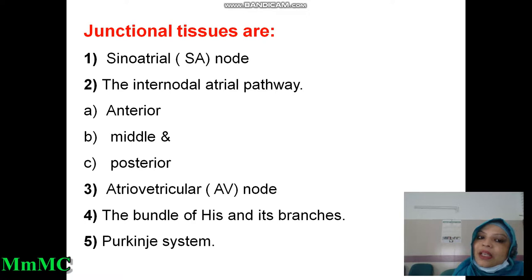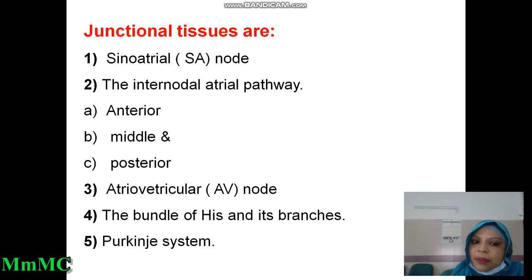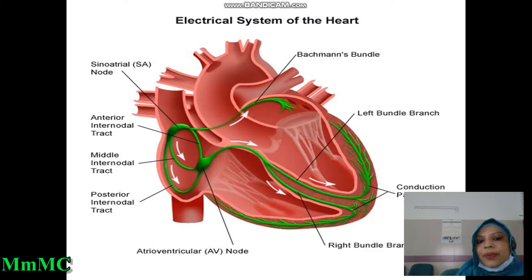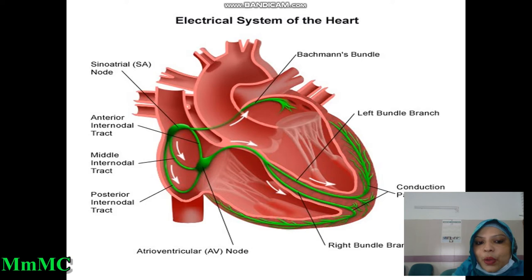The anterior internodal pathway is also called Bachmann's bundle. The middle internodal pathway is called Wenckebach's bundle, and the posterior internodal pathway is called Thorel's tract. In physiology, you only need to mention anterior, middle, and posterior — that is enough. In the figure, you can see the location of the sinoatrial node, atrioventricular node, and the internodal pathways including the anterior, middle, and posterior internodal pathways.